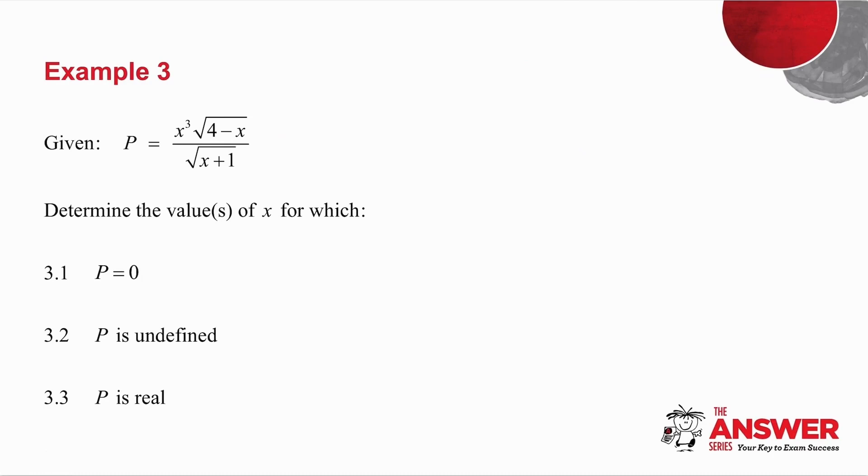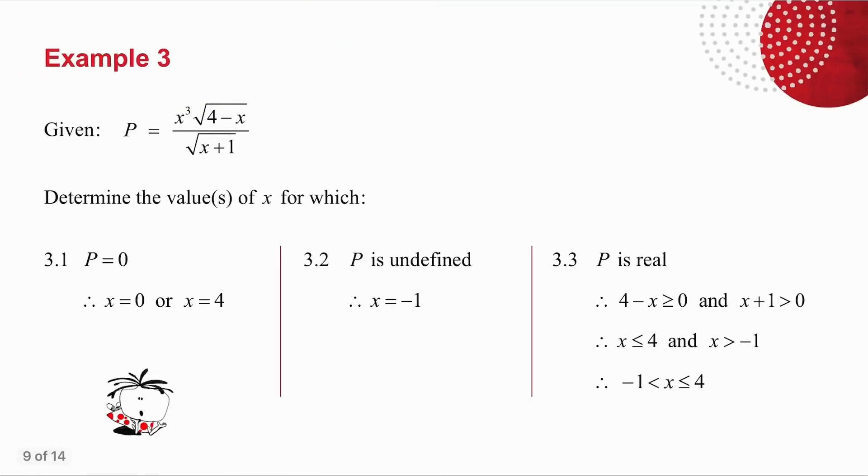Example number 3. You've been given a fraction, and you've been asked to determine the values of x for which various things happen. So pause the video, try these, and then we'll look at them together. You want p to be equal to 0. Well, the only way I can get a fraction to be 0 is if the top of the fraction is 0. So either x is 0, or x is 4.